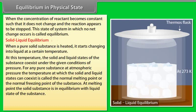For any pure substance, at atmospheric pressure, the temperature at which the solid and liquid states can coexist is called the normal melting point or the normal freezing point of the substance. At melting point, the solid substance is in equilibrium with the liquid state. Let us consider ice and water at 273 Kelvin, the melting point of ice, taken in a perfectly insulated thermos flask. The temperature as well as the masses of ice and water remains constant, representing a dynamic equilibrium between ice and water.